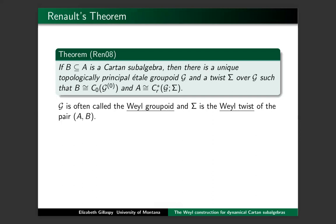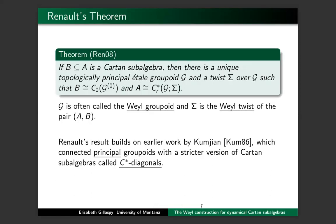We often call G the Weyl groupoid and σ the Weyl twist. So understanding this G and this σ is the Weyl construction that I mentioned in my title. Renault's work builds on Kumjian's groundbreaking work from the 80s, where instead of looking at topologically principal groupoids, Kumjian was looking at principal groupoids. Instead of getting Cartan subalgebras, you get something a little stricter called a C*-diagonal.